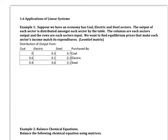Let's read example number one. Suppose we have an economy that has coal, electric, and steel sectors. The output of each sector is distributed amongst each sector by the table. The columns are each sector's output and the rows are each sector's input. We want to find equilibrium prices that will make each sector's income match its expenditures.